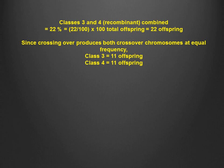Since the recombination frequency between the genes is 22 percent, the class 3 and 4 offspring combined represent 22 percent, or 22 of the 100 offspring.